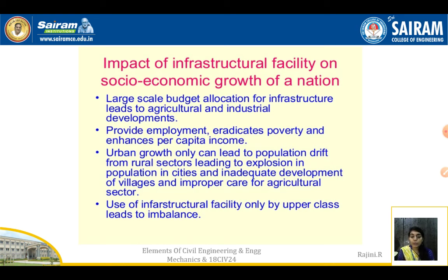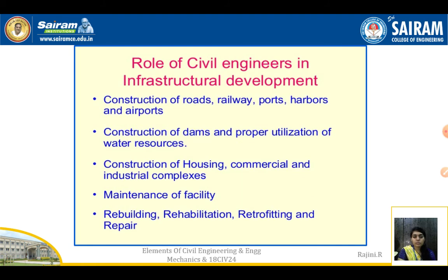Urban growth can lead to population drift from rural sectors, causing population explosion in cities and inadequate development of villages and agriculture sectors. However, with good construction technologies and water resources and irrigation systems, rural areas can also achieve urban-level growth. Infrastructure facilities used only by the upper class and not by rural areas will create imbalance. Therefore, infrastructural facilities should be extended to the whole nation.